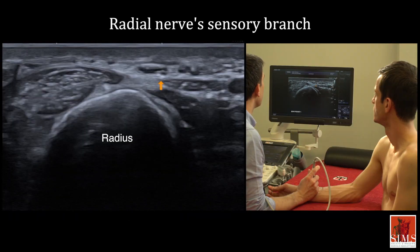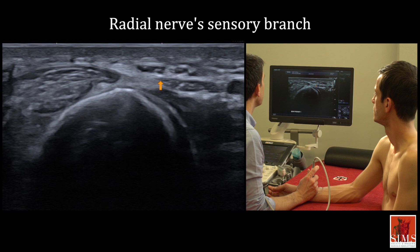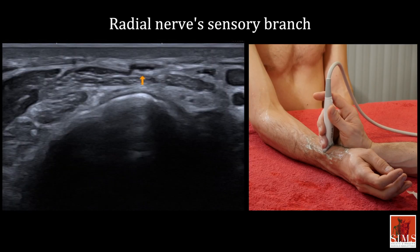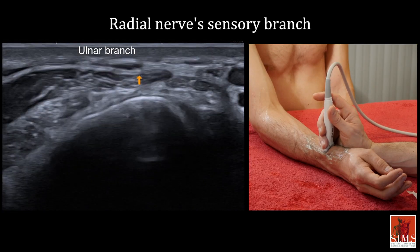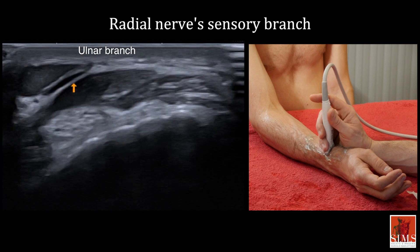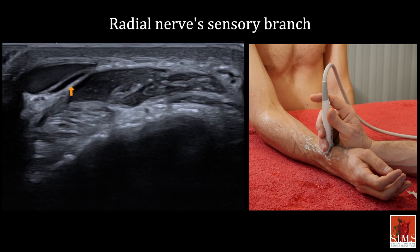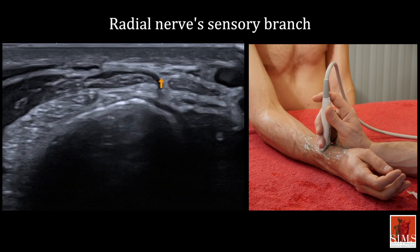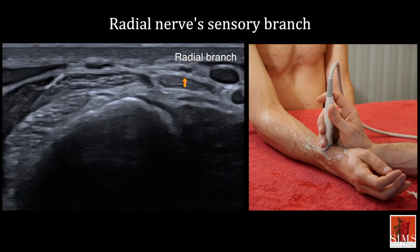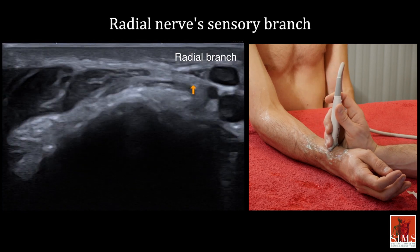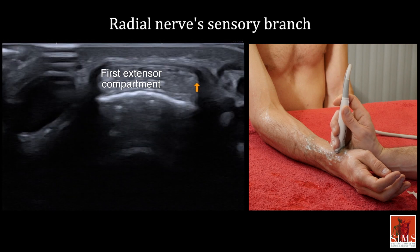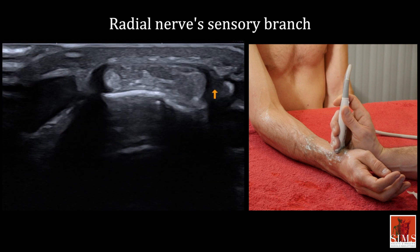There are many anatomical variants — with here, for example, a division with an ulnar branch that reaches the cephalic vein, and a more radial branch that reaches the retinaculum of the first extensor compartment.